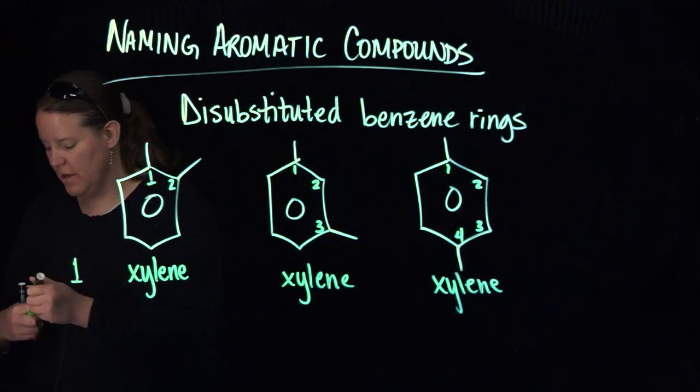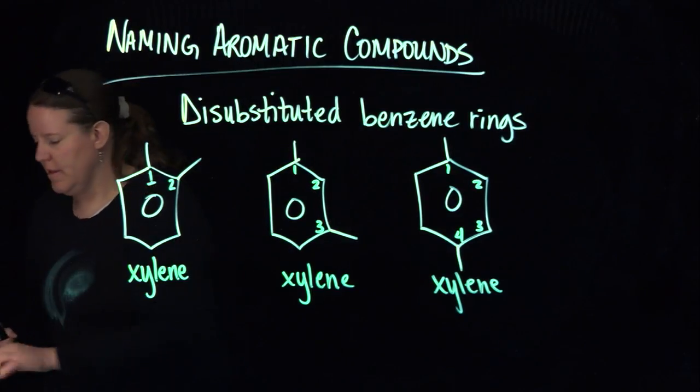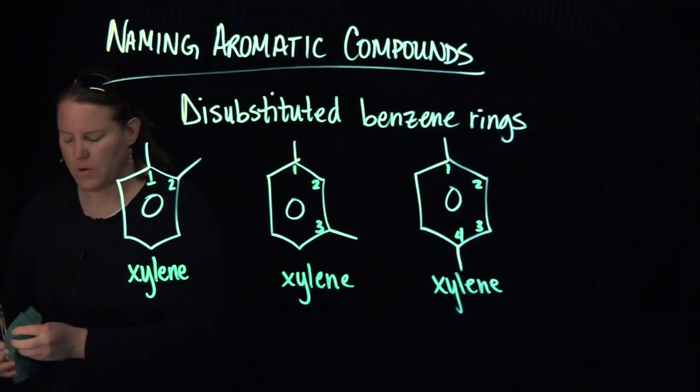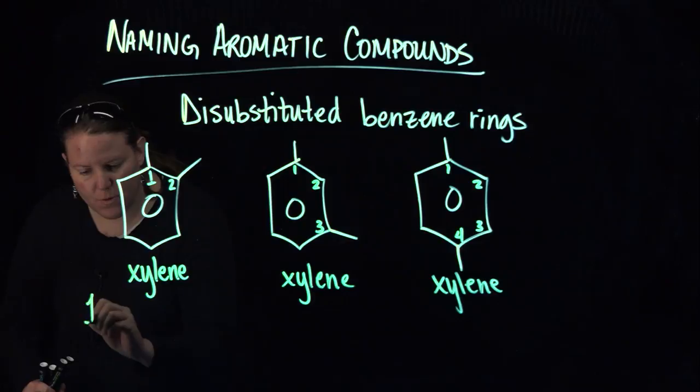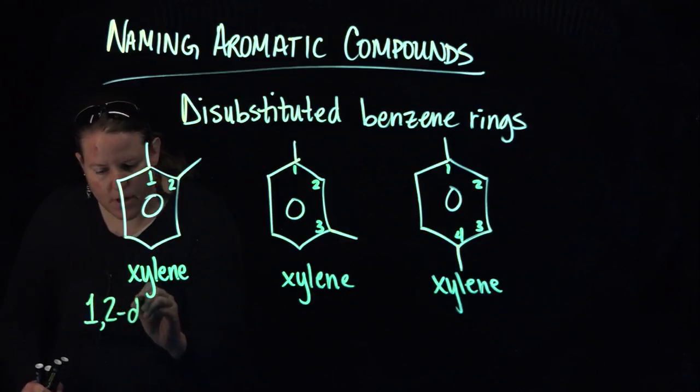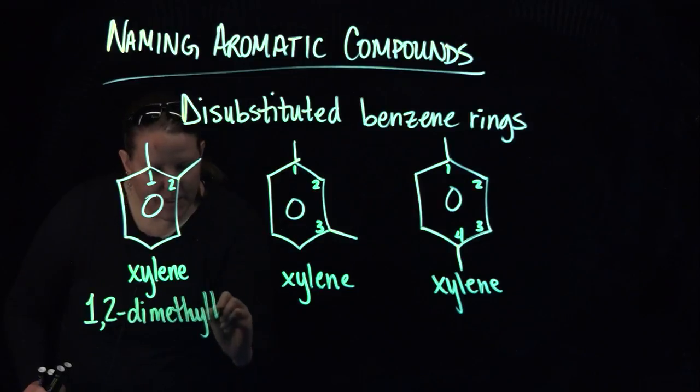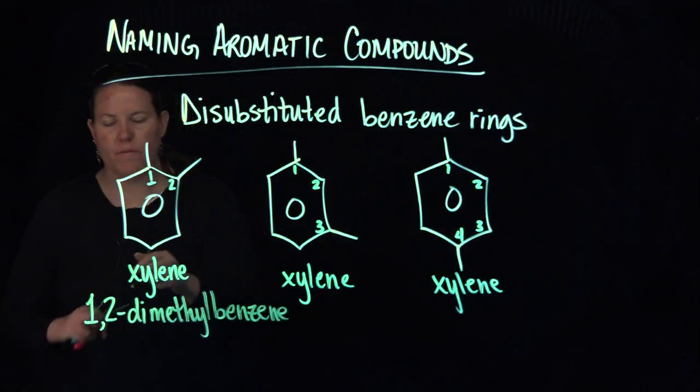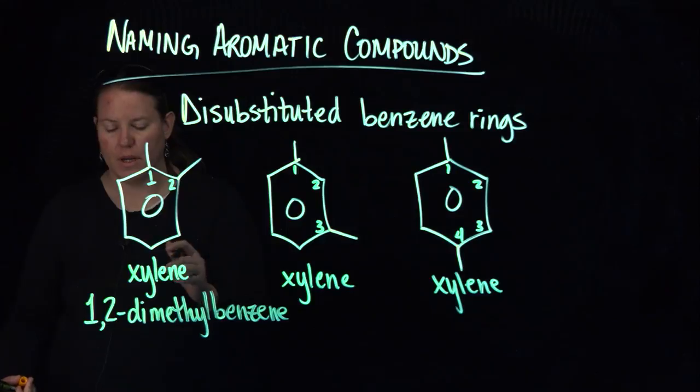You could call it 1, 2-dimethyl benzene, right? Benzene being the common name for the six-membered ring with the circle in it, meaning conjugation.